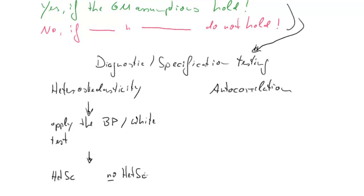And the result of this is either going to be heteroscedasticity or no heteroscedasticity. The test will tell us whether there is heteroscedasticity or not. In terms of autocorrelation, we will apply what we call the LM test. And as a result of this test, we will be able to say whether there is autocorrelation or no autocorrelation.